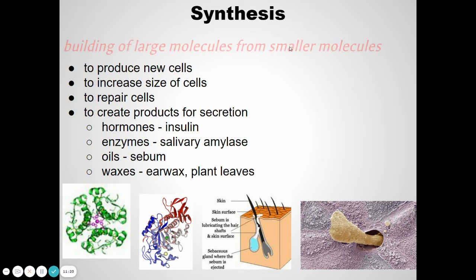Many parts of living things are made of large, complex molecules. To build those molecules we have the process of synthesis — synthesis takes small, simple molecules and puts them together to make larger molecules. We need to make new molecules to grow taller, to build new bone and muscle tissues, to grow cells in size, and to fill in a cut on your skin — synthesizing new molecules from smaller, simpler ones.